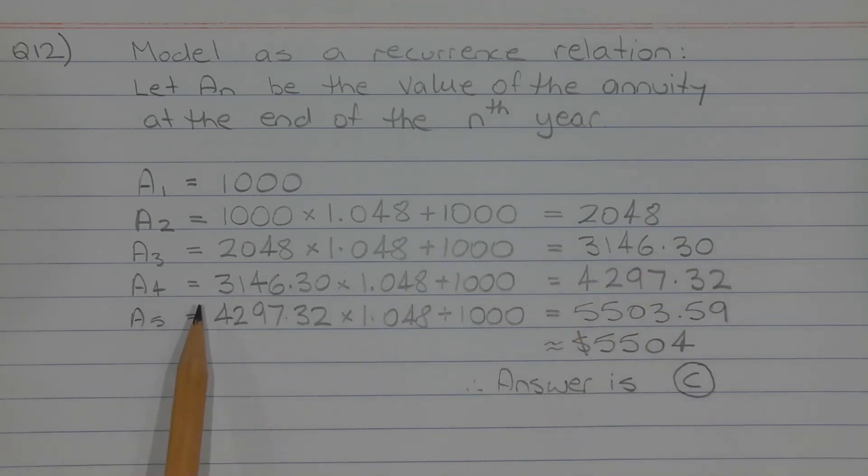And the process is repeated. So the value of A4, which is the value of the annuity at the end of the fourth year is $4,297.32 and the value of the annuity at the end of the fifth year is equal to $5,503.59, which rounds to $5,504 correct to the nearest dollar. Therefore the answer is option C.